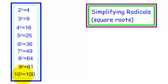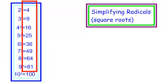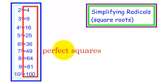You need to have a good idea of this column I'm pointing to now. 2 squared means 2 times 2, which is 4. 3 squared: 3 times 3 is 9. 4 squared: 4 times 4 is 16. 5 squared: 5 times 5 is 25. So these numbers — 4, 9, 16, etc. — those are all perfect squares.